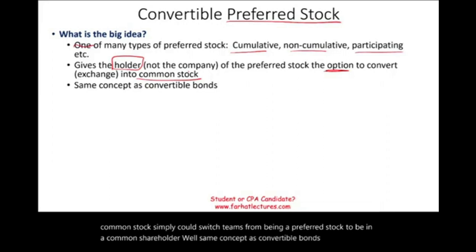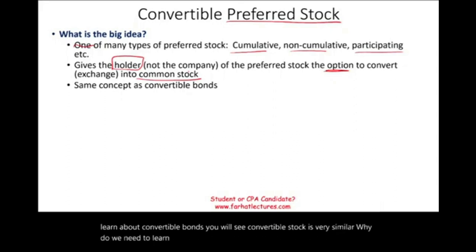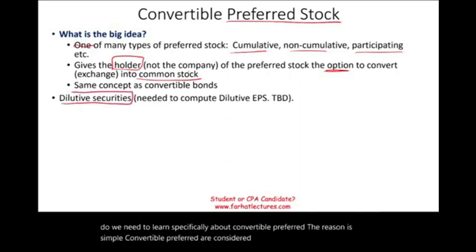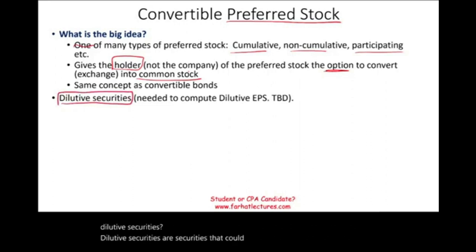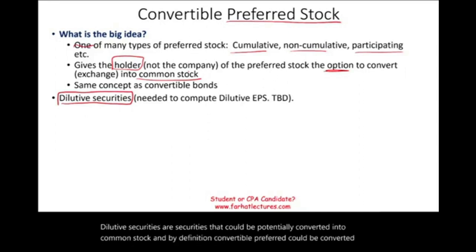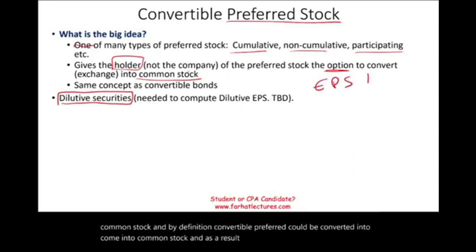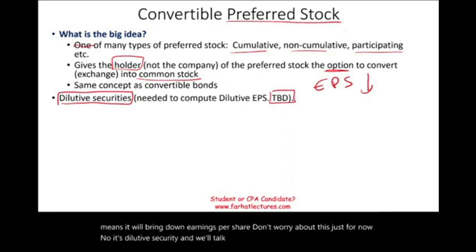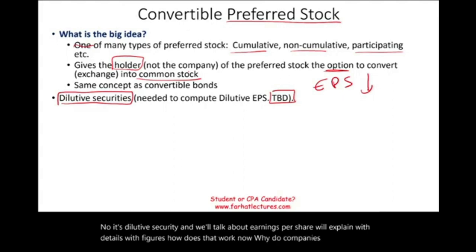If you've learned about convertible bonds, you'll see convertible preferred stock is very similar. We need to learn specifically about convertible preferred because it is considered a dilutive security. Dilutive securities are securities that could potentially be converted into common stock. Because convertible preferred can be converted into common stock, it could dilute earnings per share — meaning it will bring down earnings per share. We'll explain how that works in detail when we cover earnings per share.